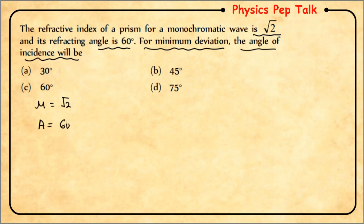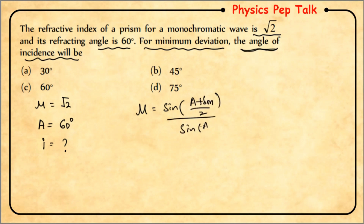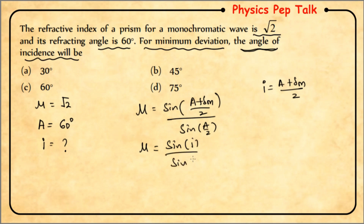At minimum deviation condition, we have the formula: μ = sin((A + δm)/2) / sin(A/2). We know that at minimum deviation, (A + δm)/2 = I, so we can write: μ = sin(I) / sin(A/2). On cross multiplication: sin(I) = μ × sin(A/2).